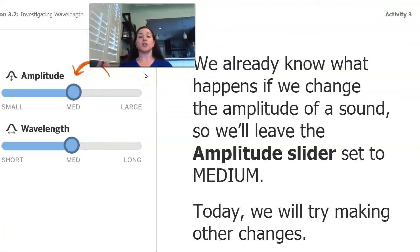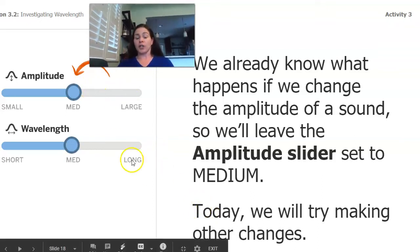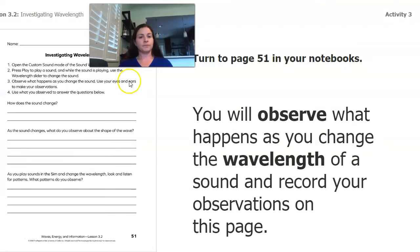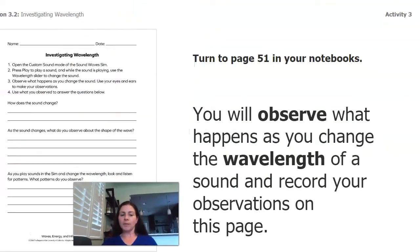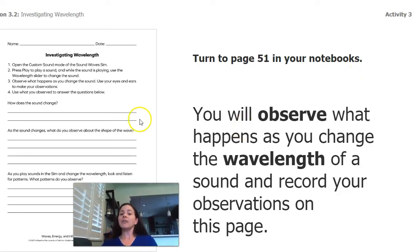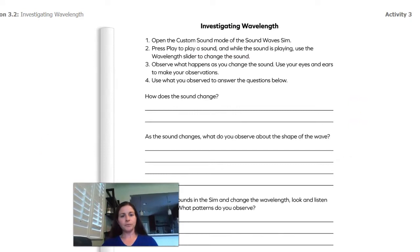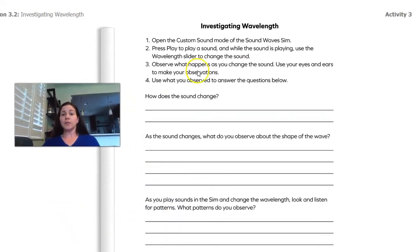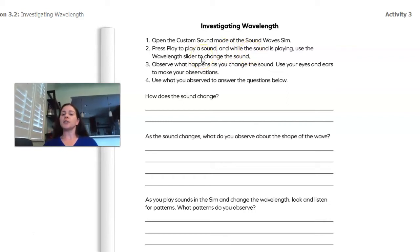We already know what happens when we change the amplitude of a sound — the wave gets taller or shorter, and it's louder or quieter. So we're going to leave amplitude alone today and look at other changes. We're going to look at wavelength. If you have your investigation notebook, you can go to page 51; if not, that's fine. We're going to observe what happens when we change the wavelength of a sound and record our observations. If you have access to the Soundwave Sim, you can do this yourself: open custom sound mode, press play, and use the wavelength slider to change the sound, using your eyes and ears to make observations.